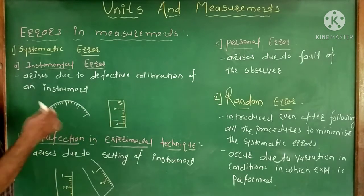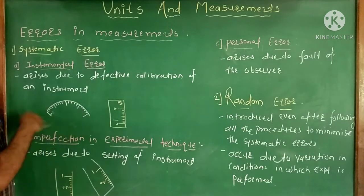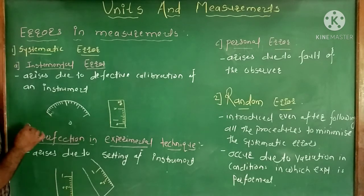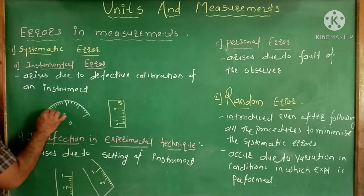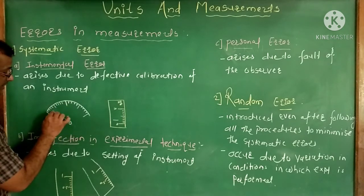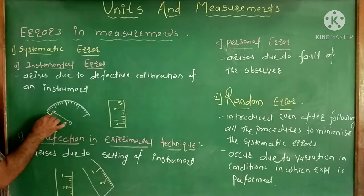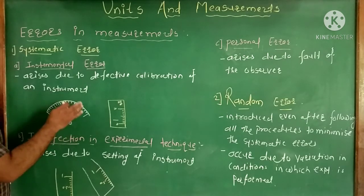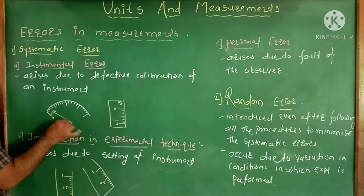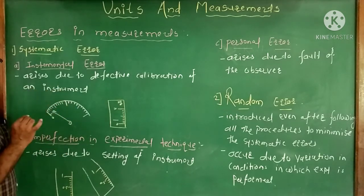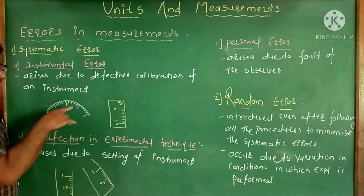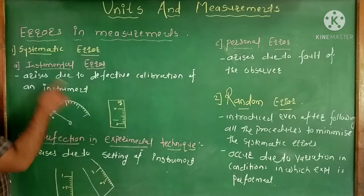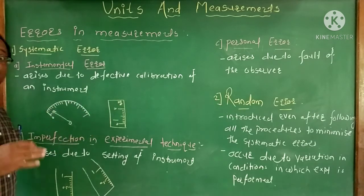Suppose you take an ammeter or voltmeter. When the ammeter or voltmeter is not connected in a circuit, the pointer should rest at zero because no current or potential is applied. But if the pointer rests on the second or third line instead of zero, then the error which arises due to this position is also called instrumental error.